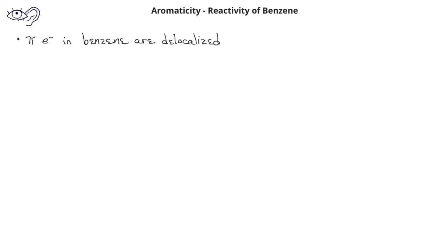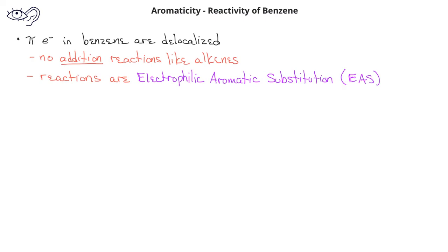Now that we've looked at what aromaticity is and examined how to name benzene and some of its derivatives, we should move on to understanding something about the types of reactions that benzene and its derivatives will undergo. Even though benzene has alternating single and double bonds in the way we typically draw the molecule, those alternating single and double bonds are actually delocalized electrons, and those pi electrons are evenly spread around the ring. What this means is that benzene and its derivatives will not undergo the usual addition reactions that alkene compounds underwent. Instead, benzene and its derivatives undergo types of reactions called electrophilic aromatic substitution, which is sometimes abbreviated EAS reactions.